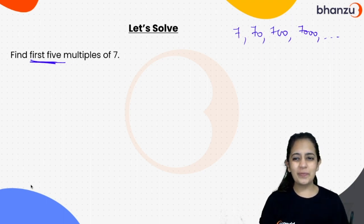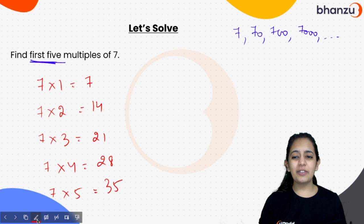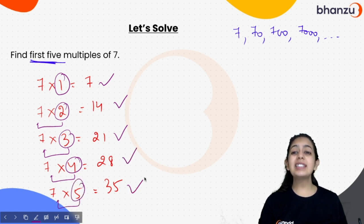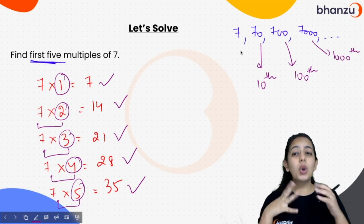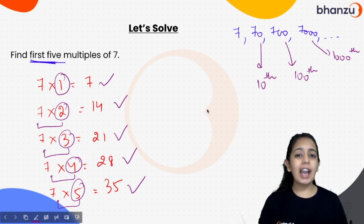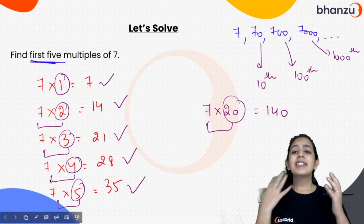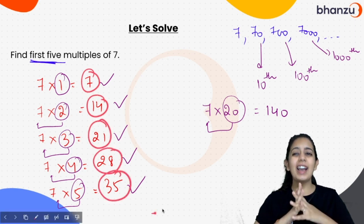For that you have to write the multiplication table of 7. So: 7 ones are 7, 7 twos are 14, 7 threes are 21, 7 fours are 28, and 7 fives are 35. So the first multiple of 7 is 7, the second is 14, the third is 21, the fourth is 28, and the fifth multiple of 7 is 35. The tenth multiple of 7 is 70, the hundredth multiple of 7 is 700, and the one thousandth multiple of 7 is 7000. So if I want to find the twentieth multiple of 7, I will multiply 7 by 20, which gives 140. So the first 5 multiples of 7 are: 7, 14, 21, 28, 35.